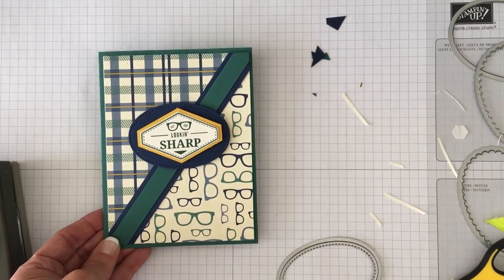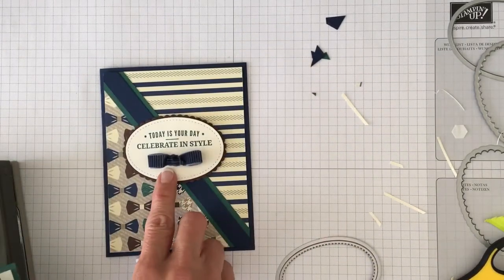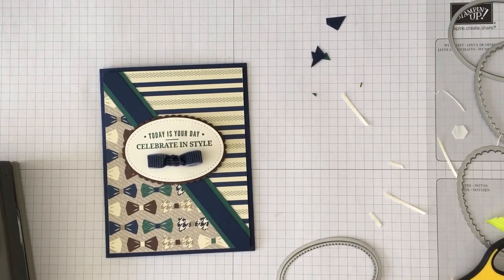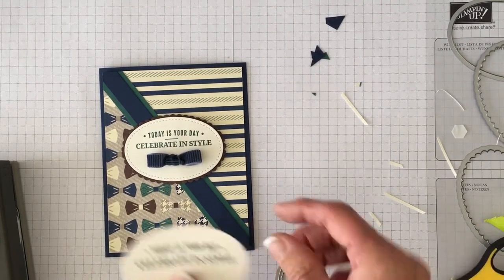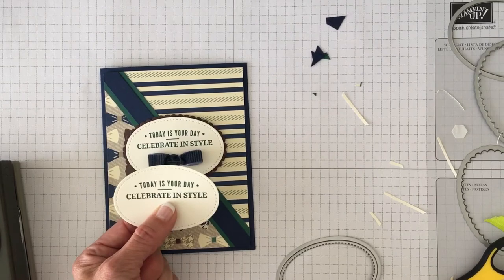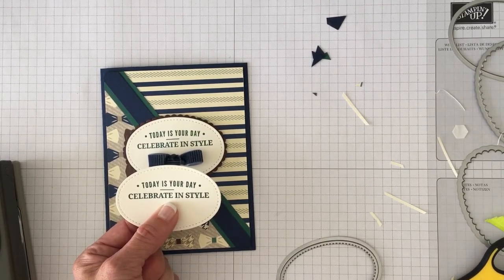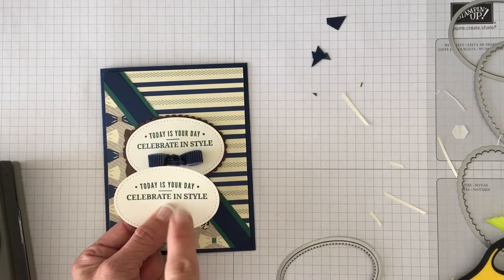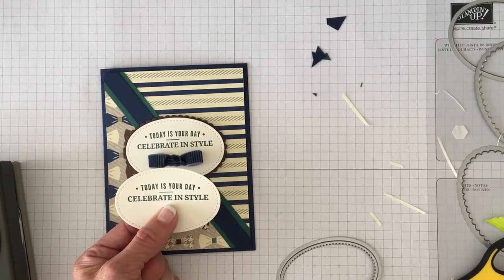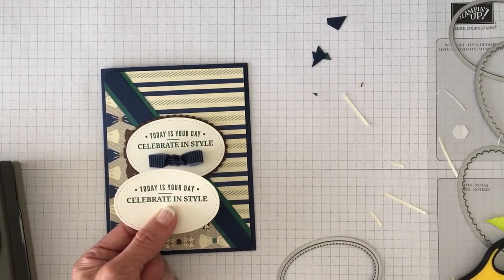Now I want to show you how I made an easy way to make a cute little bow. So what I did is I stamped Today's Your Day Celebrate in Style and I stamped it on a stitched shape oval. And that's the next to the largest stitched shape oval.